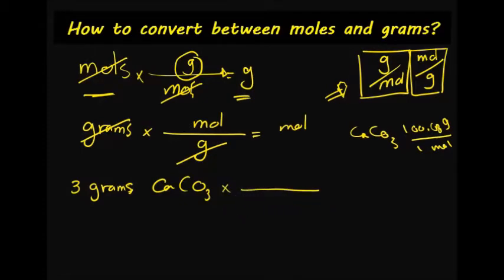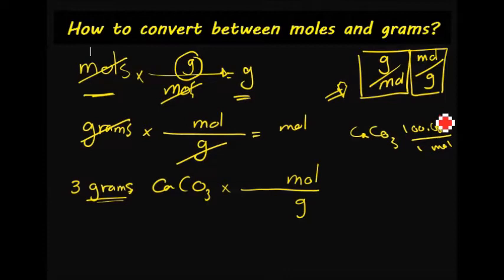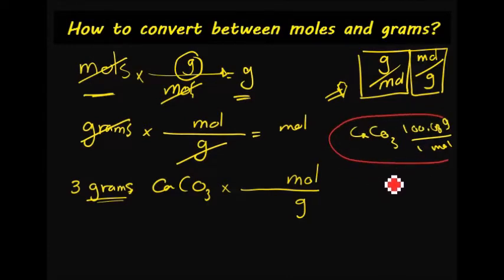On this side I have grams on the top, so I need to put grams on the bottom here so grams can cancel out, and that way I have moles on the top. So the molar mass of calcium carbonate is 100.08 grams over moles.